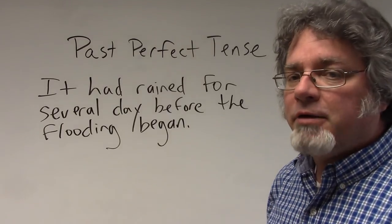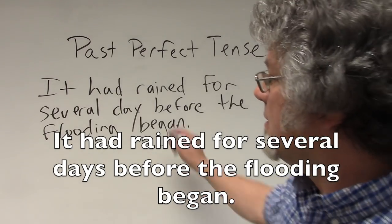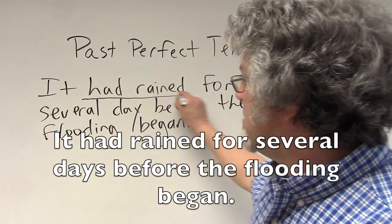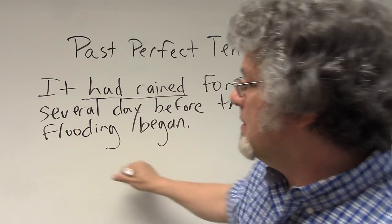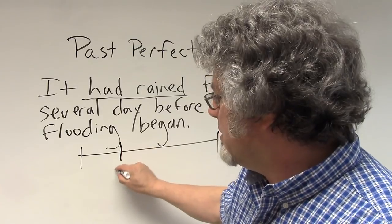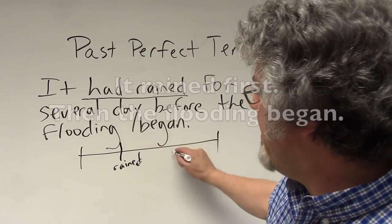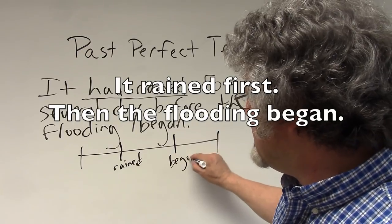It had rained for several days before the flooding began. Here's the past perfect tense. On the timeline, this is what happens first. So it rained several days and then the flooding began.